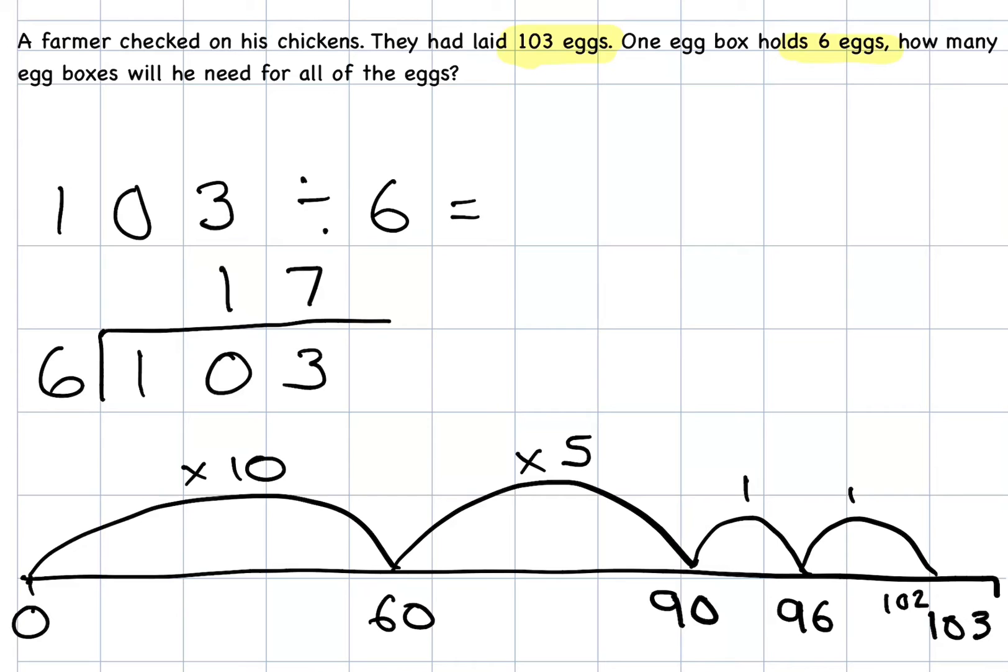But I've got something left over. I've got 1 egg left over. I've only got to 102 eggs. So, I've got 1 egg left over. So, I can do that as remainder 1. Now, the question was asking me how many boxes I needed. Well, I'm going to have 17 full boxes. But then I've got an egg left over. Now, that egg still needs a box. So, therefore, I won't just need 17 boxes. I will need 18 boxes. Because that one egg left will still need to go in a box. So, it's really important to read the context of the question carefully so you can get an accurate answer.